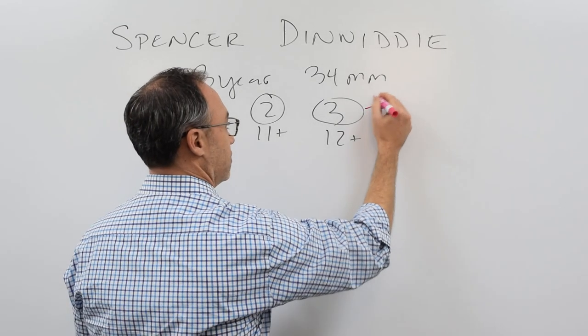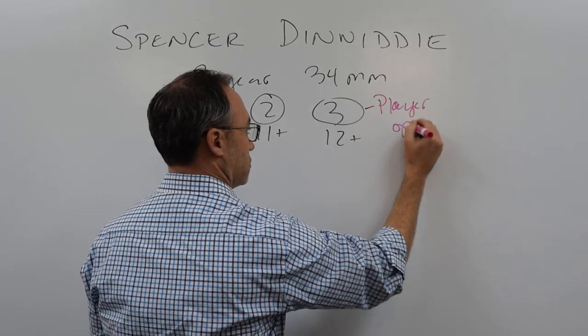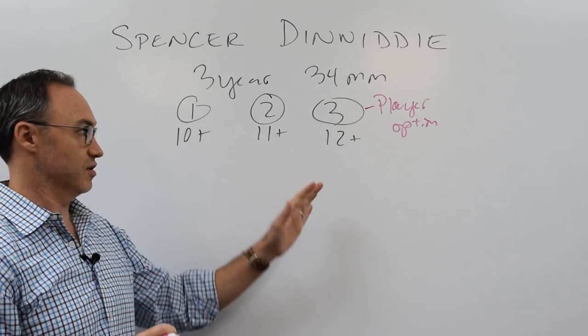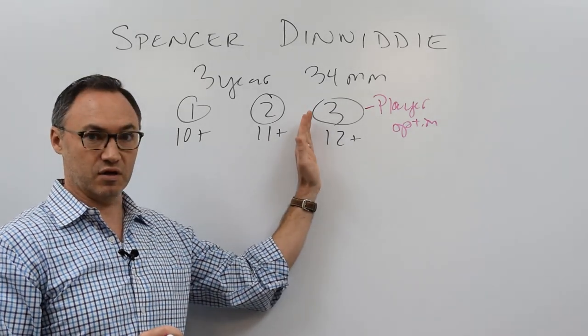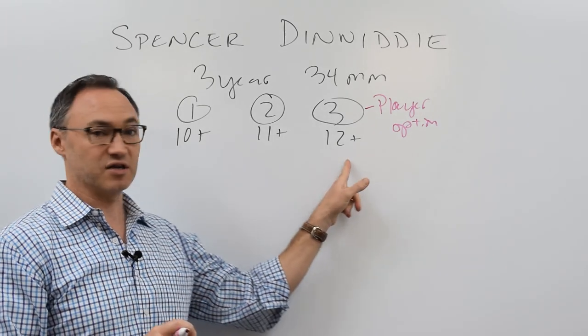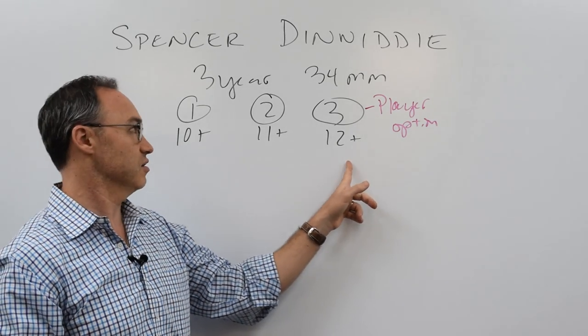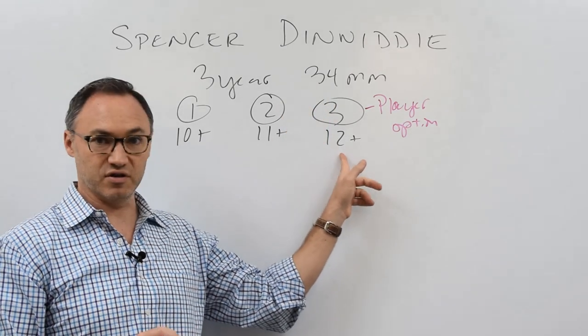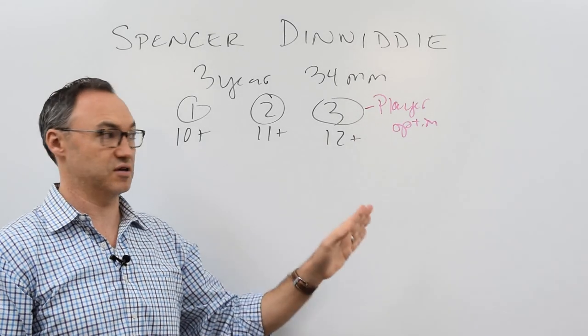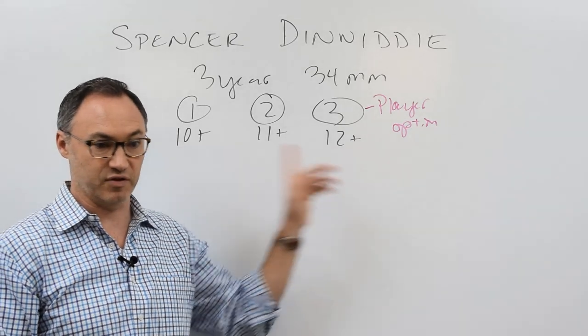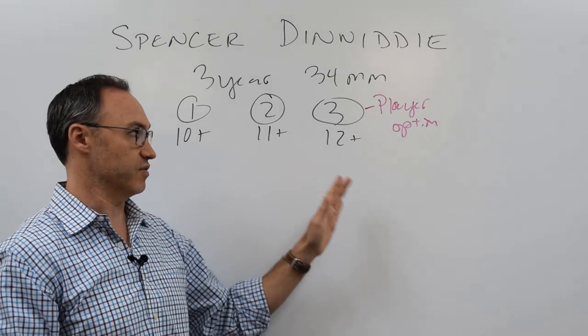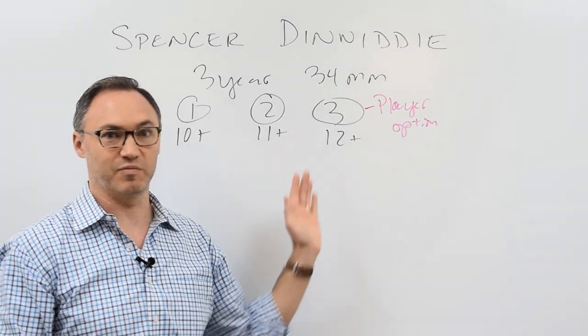Now, one important feature is this. It's called a player option year. What that means is that after two years, Spencer has the opportunity to go to the Nets and say, I don't want this third year of my contract here at $12 million. Why might he do that? He might do that because maybe he's played so well here that he can sign a new three- or four-year contract worth $50 million. With this year being, you know, $20 million or something. So he has the option to either take this, in which case if he exercises this option, he tells the Nets, yeah, I want to come back for my 12-plus million, and the Nets have to agree and pay him the 12-plus million to come stay, the Nets or any team he might get traded to.